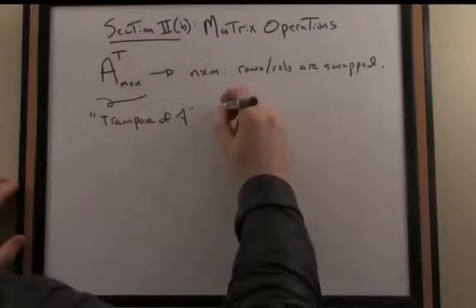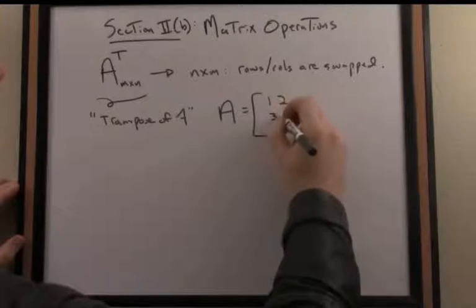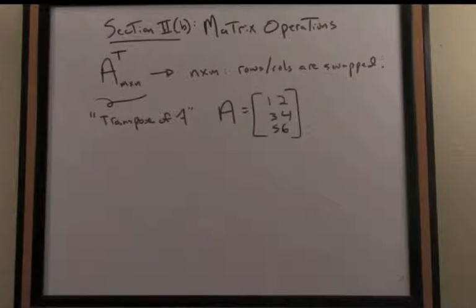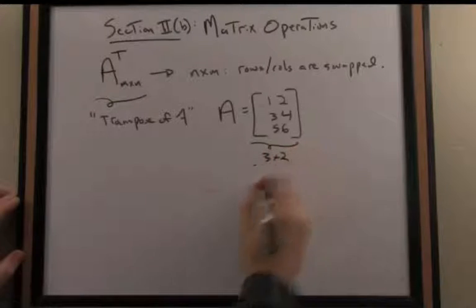For instance, if I have a matrix, let's make it non-square: 1, 2, 3, 4, 5, 6. That particular matrix has three rows and two columns, so this is a 3 by 2 matrix.